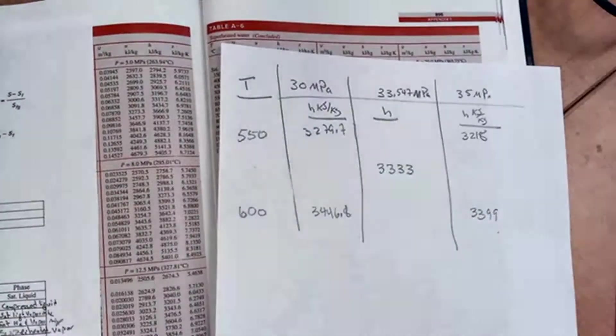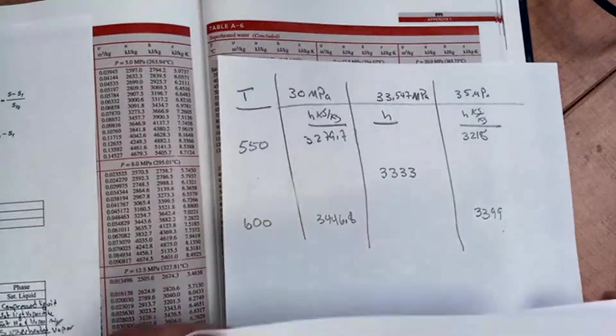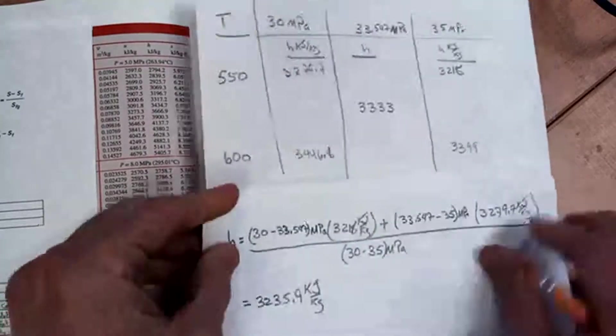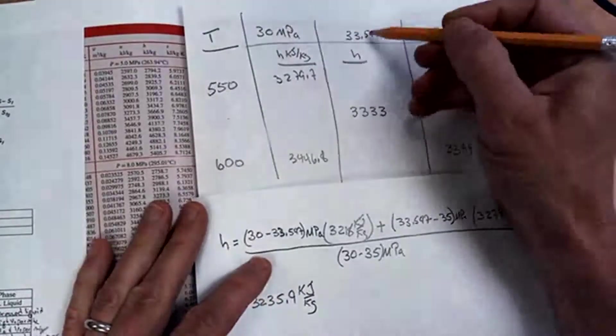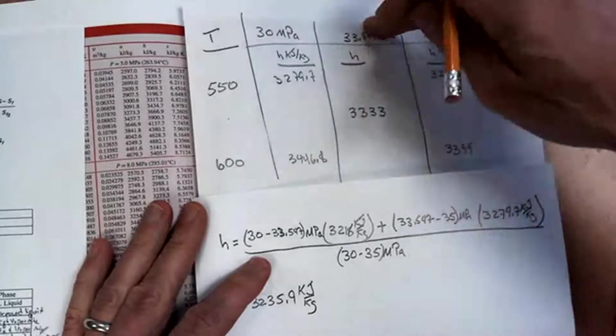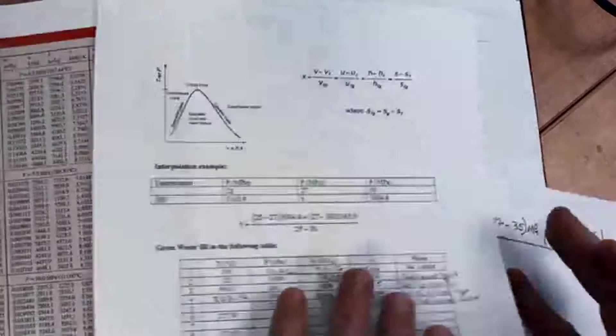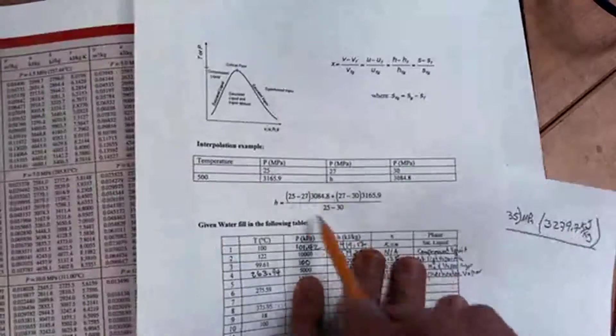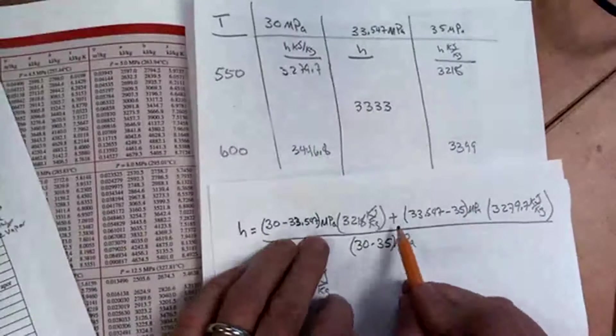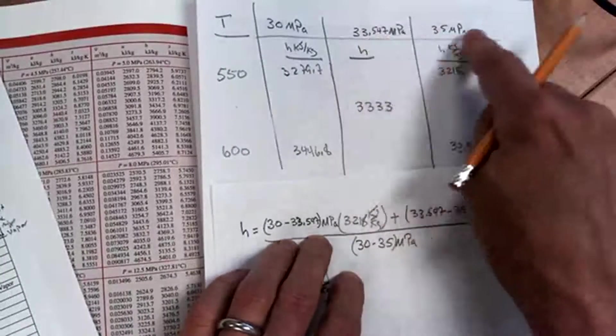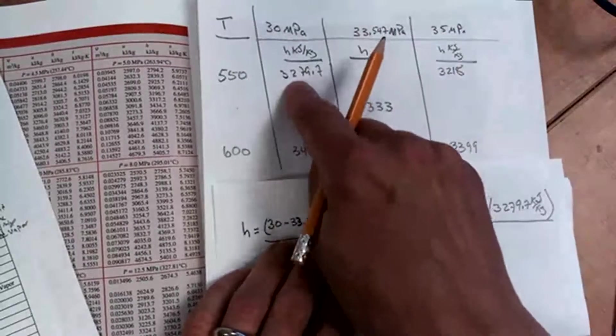So the first interpolation I'm going to do is for the top row for 550. Here's what the interpolation would look like. So I'm just going to take 30 megapascals minus 33.547 megapascals and multiply it by the 3,218. I'm following this pattern. This is the same pattern that I've got here in the notes with this table.